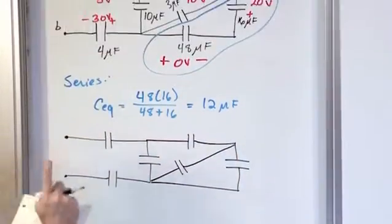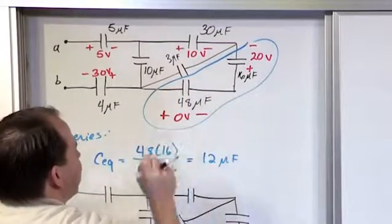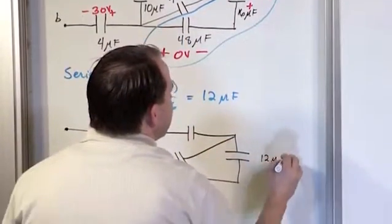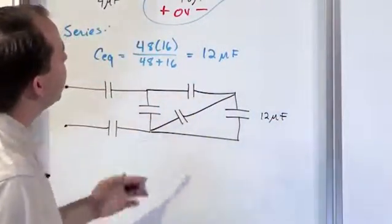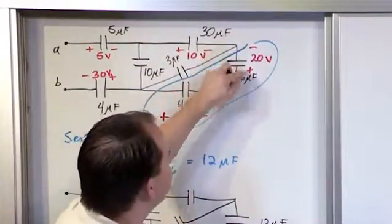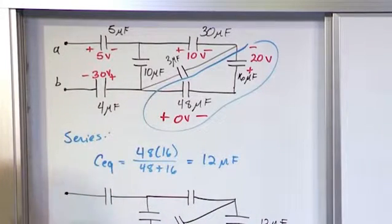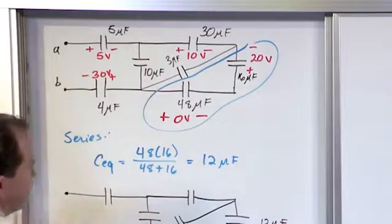All right, so what we just found is that these two capacitances when you find their equivalent capacitance you get 12 microfarads. And what do you think the initial voltage is going to be? Well, here we have 20 going negative to positive. Here we had zero, so really it's the same exact voltage because you're basically adding zero volts to it.